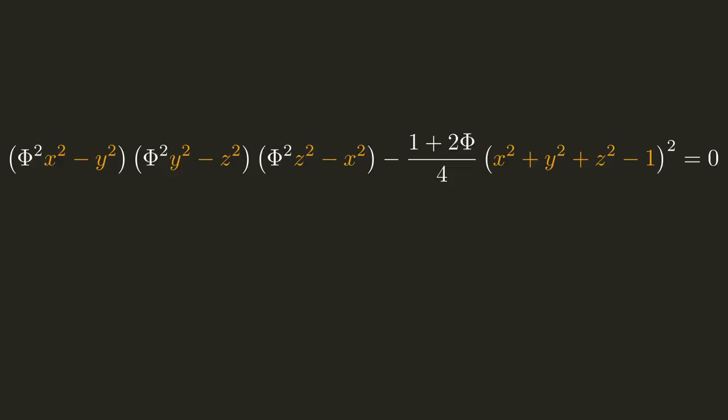The second term looks familiar. We just have the formula of our sphere, squared and multiplied with some other number.